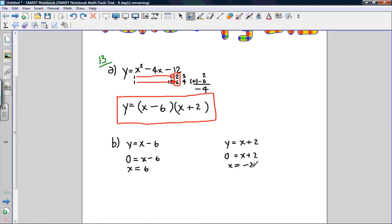So these two are the x-intercepts. If you want to put them as coordinates, it would be (6, 0) and (-2, 0).